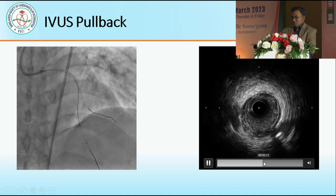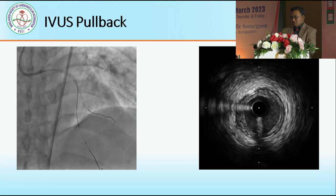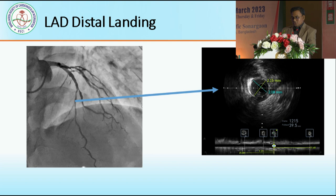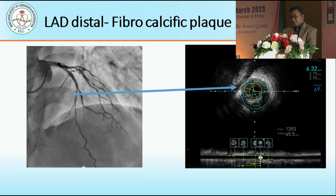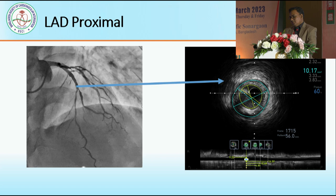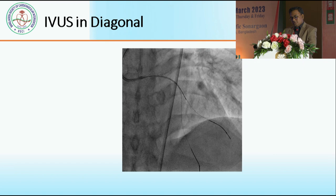We can appreciate that there is a fibro-calcific lesion, and here is the origin of diagonal 2 — we can see the two wires. If we consider the LAD distal landing, there is a 2.1 mm diameter distally, and the LAD proximal landing is 3.9 mm by IVUS. The LAD distal fibro-calcific plaque has a very low minimal luminal area and 69% lesion burden. The LAD proximal also has 60% plaque burden.